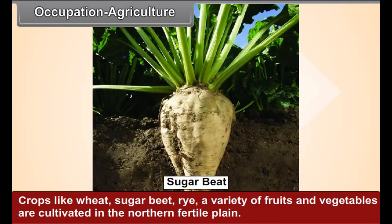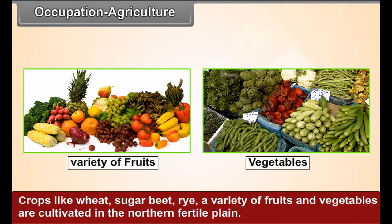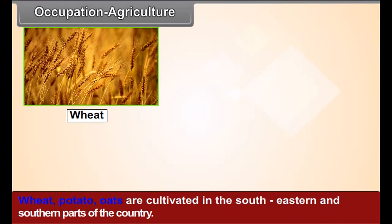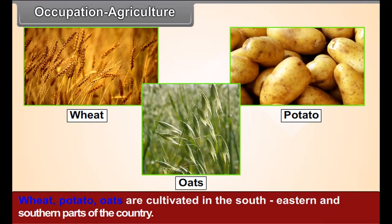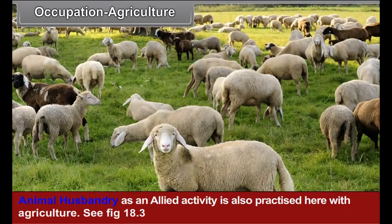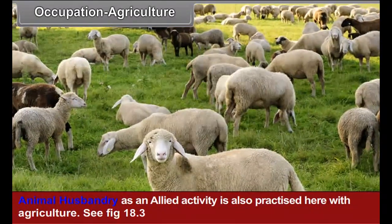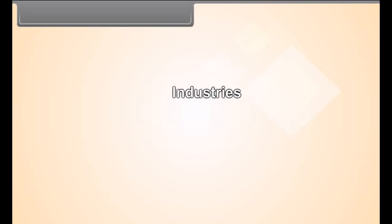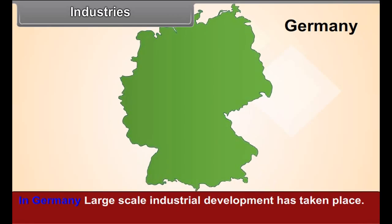Crops like wheat, sugar beet, rye, and a variety of fruits and vegetables are cultivated in the northern fertile plain using modern technology. Wheat, potato, and oats are cultivated in the south-eastern and southern parts. Germany is a leading producer of potato in the world. Animal husbandry is also practiced as an allied activity. Fishery is practiced in the North Sea and the Baltic Sea, where cod, herring, and other fish are mainly found.